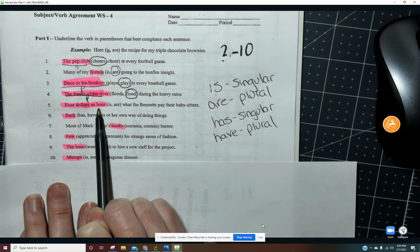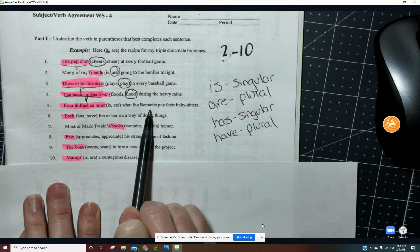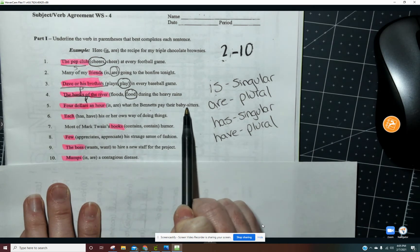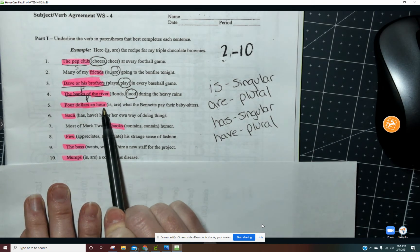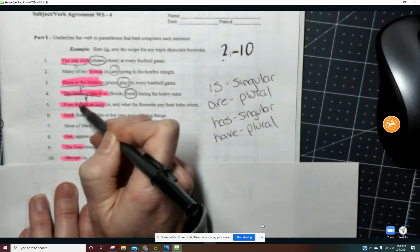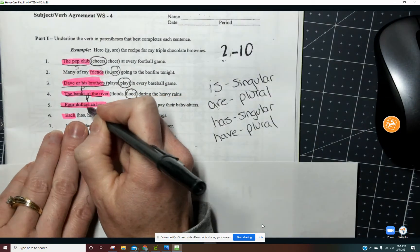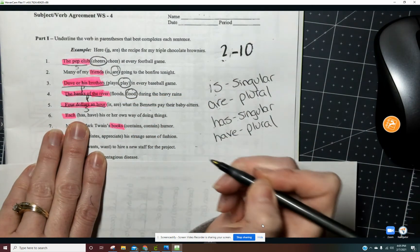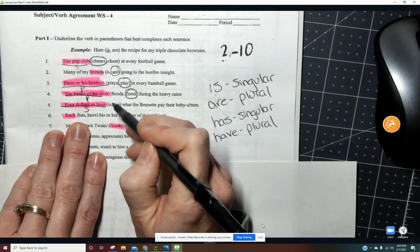Four dollars an hour is what the Bennetts pay their babysitters or four dollars an hour are what the Bennetts pay their babysitter. Well, four dollars an hour is singular and so we need is.